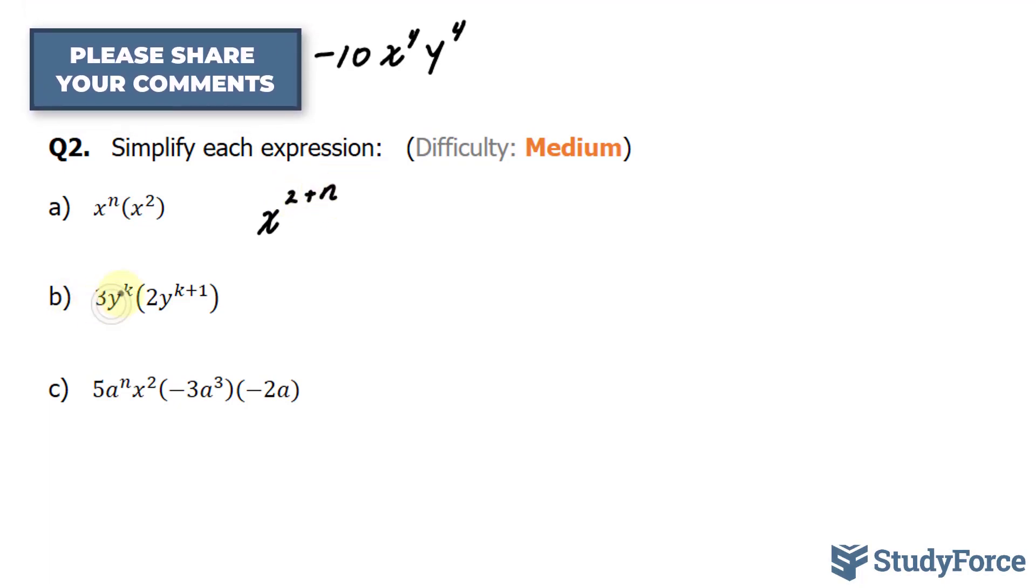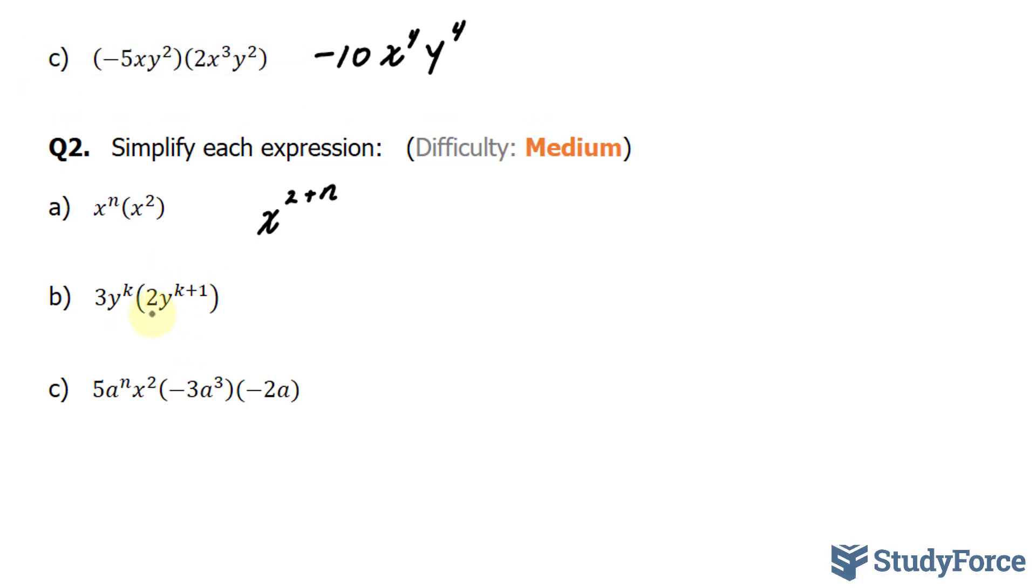In question B, we have 3y to the power of k times the monomial 2y to the power of k plus 1. I'm going to multiply 3 and 2 together. That's 6. And then I have y to the power of k times y to the power of k plus 1. I'll expand this for you. You have y to the power of k plus k plus 1. k plus k is 2k. They're like terms. 2k plus 1 is the exponent. So we have 6y to the power of 2k plus 1.